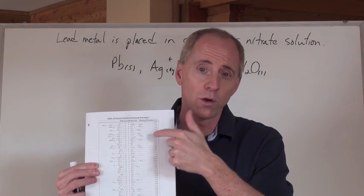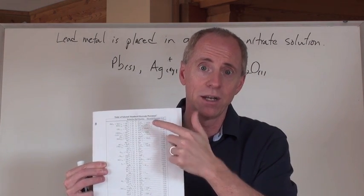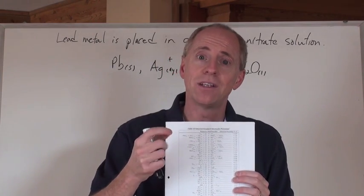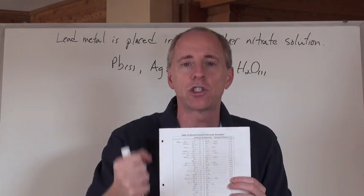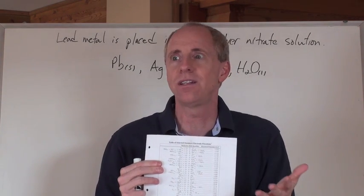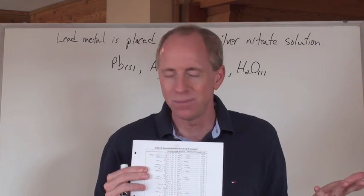Until you get to fluoride ion, F negative up here. So you see, F2, which is fluorine gas, is the thing that wants to gain electrons the most. And once it does, it forms F negative, the thing that wants to give them up the least. Makes total sense.